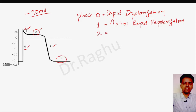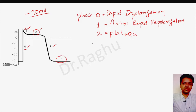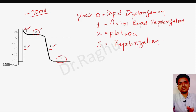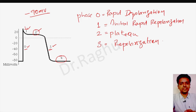Then we have phase two, wherein there is no much change in the membrane potential — it almost remains static. That is called the plateau phase. After that we have phase three, which is the proper repolarization phase. So the four phases are: phase zero (rapid depolarization), phase one (initial rapid repolarization), phase two (plateau phase), and phase three (repolarization).